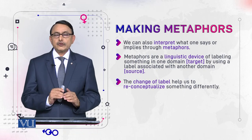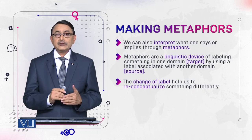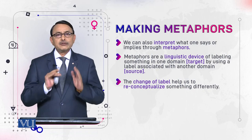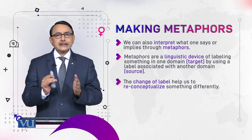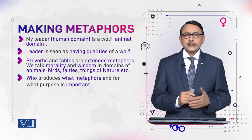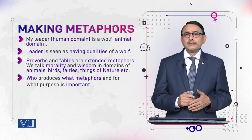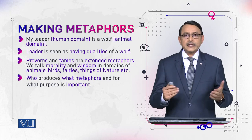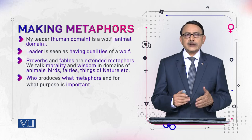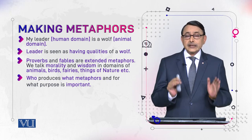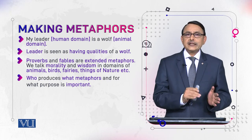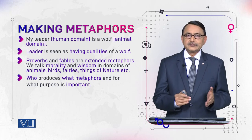When you change the label of a person or entity and give it a label from some other domain, mentally and perceptually you start thinking about that person according to that label and everything associated with it. For example, if you say 'my leader is a wolf' — in Turkish historical dramas, the hero is called 'rebellious wolf' by Christians. Wolf is a sign of bravery in Turkish history. The leader is from the human domain, the wolf from the animal domain. When you say 'my leader is a wolf,' you start thinking about the leader like a wolf. This is what we mean by metaphor.